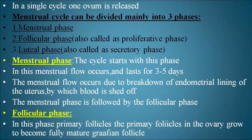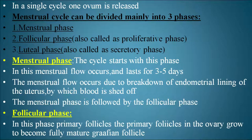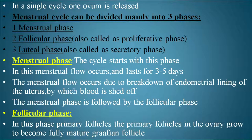The first phase is called the menstrual phase. The second phase is the follicular phase, also called the proliferative phase. The third phase is the luteal phase, also called the secretory phase. The cycle starts with the menstrual phase, in which menstrual flow occurs and lasts for three to five days. Menstrual flow occurs due to the breakdown of the endometrial lining of the uterus, by which blood is shed.